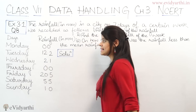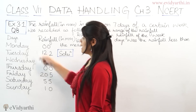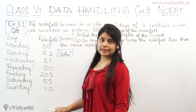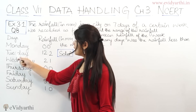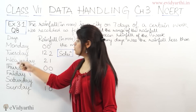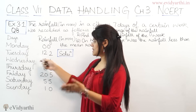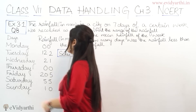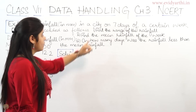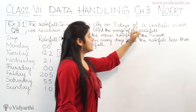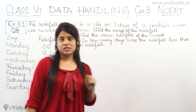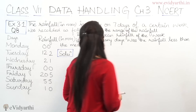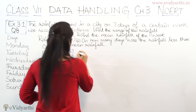Here we have a table in which we have recorded a week of rainfall — Monday, Tuesday, Wednesday and so on. So, what do we need to do? Find the range of the rainfall. Let's start.